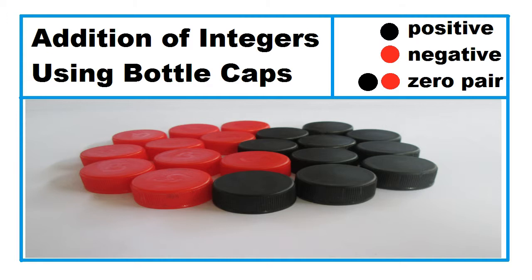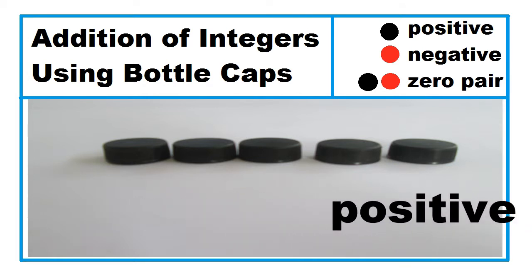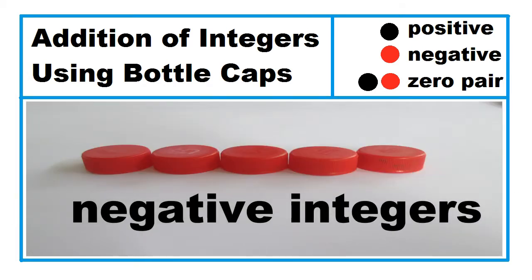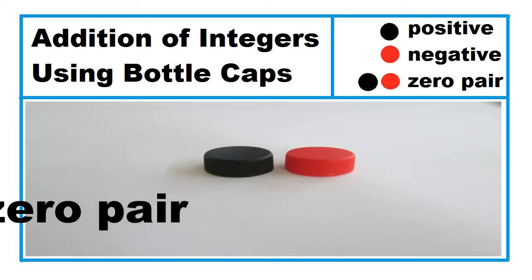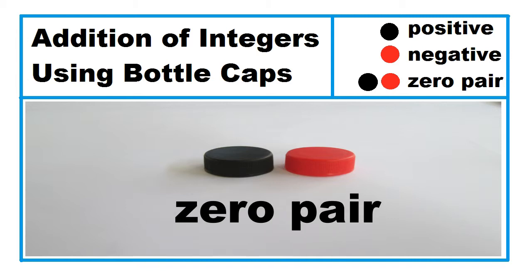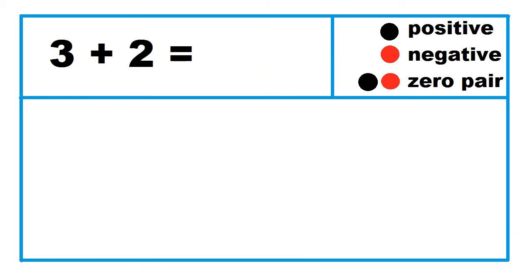Addition of integers using bottle caps. Black caps represent positive integers. Red caps represent negative integers. Zero is represented by a black and a red cap, which we refer to as a zero pair.